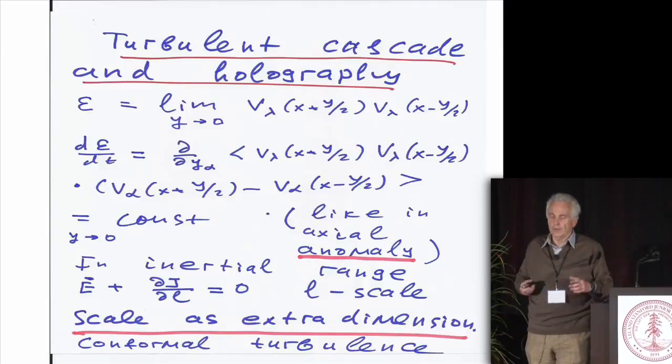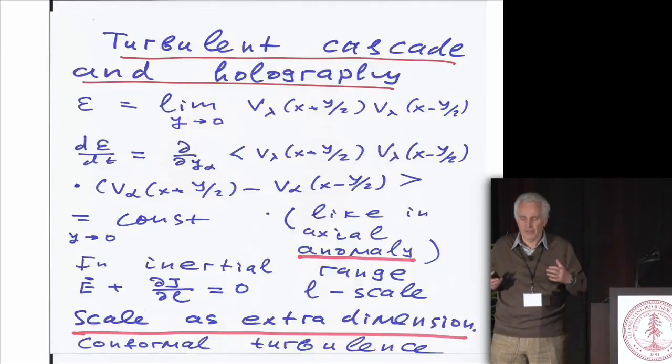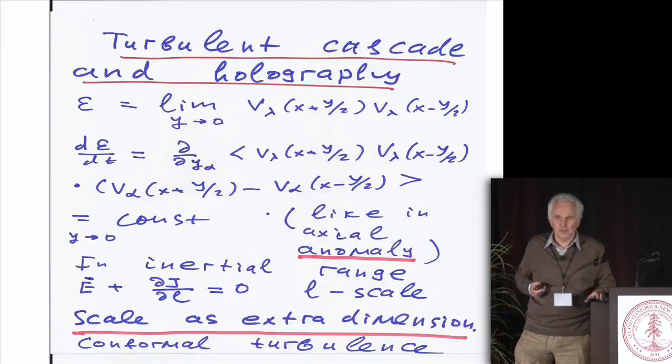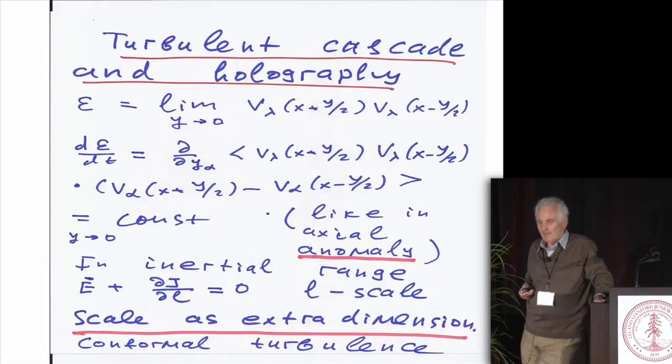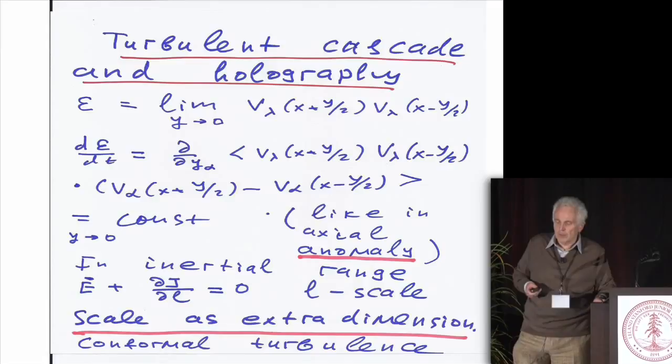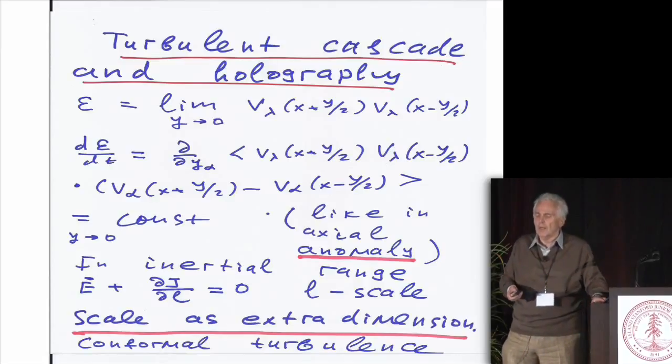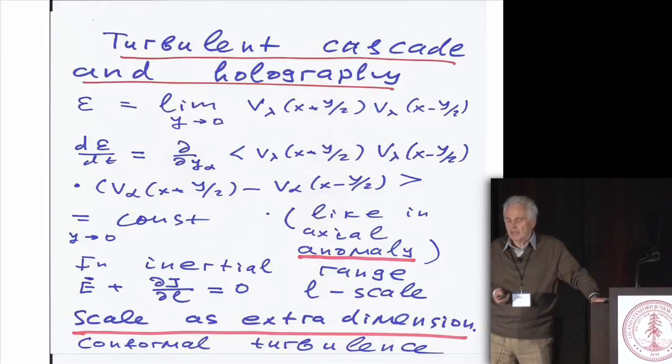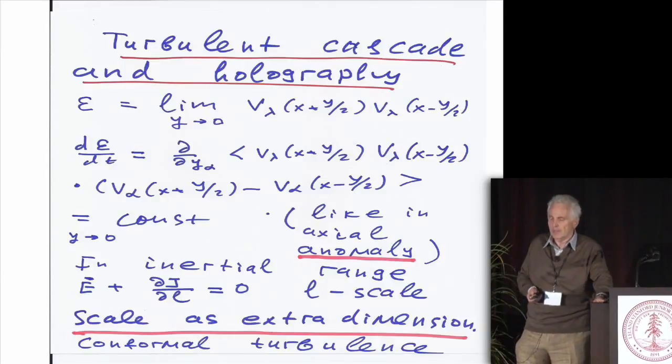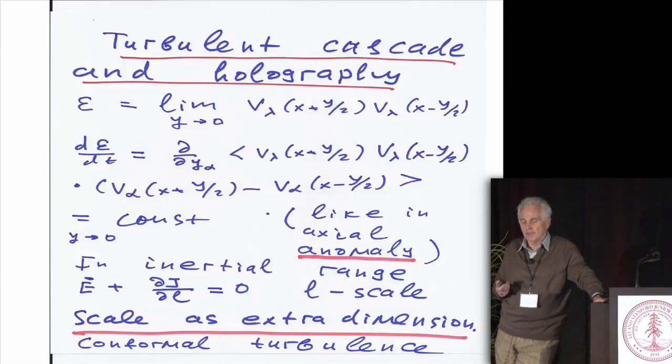The next problem which we will attack in our five years plan is the theory of turbulence. Here I want to stress that there is certain hope. Well, first of all, the basic thing in the theory of turbulence is that you have the so-called dissipative anomaly.